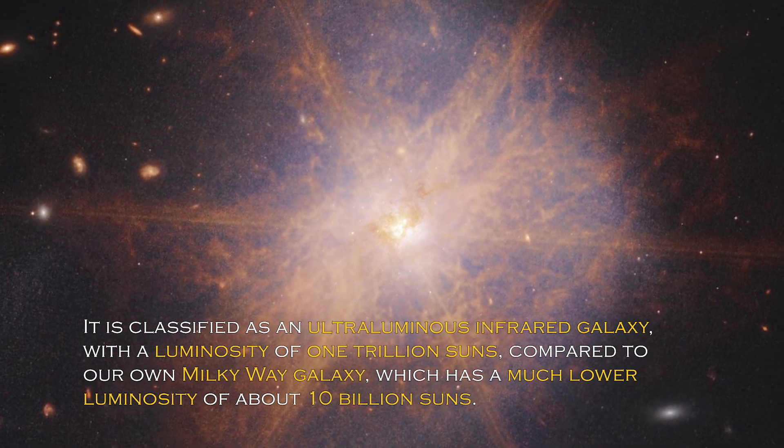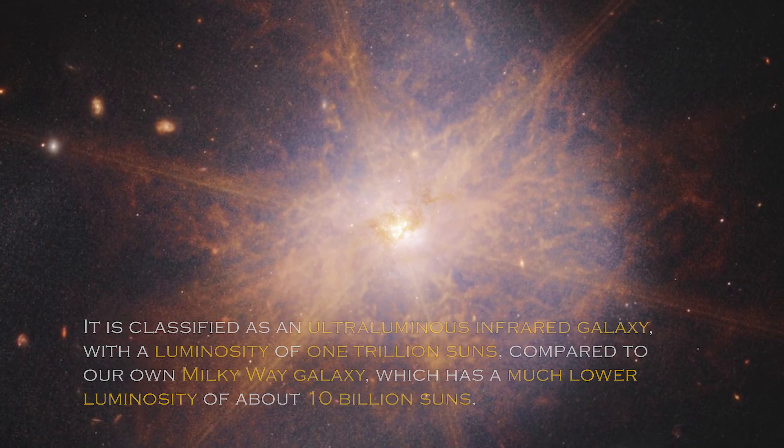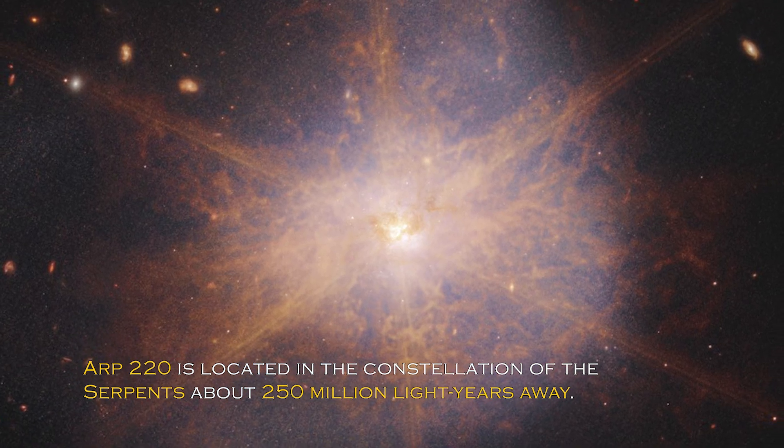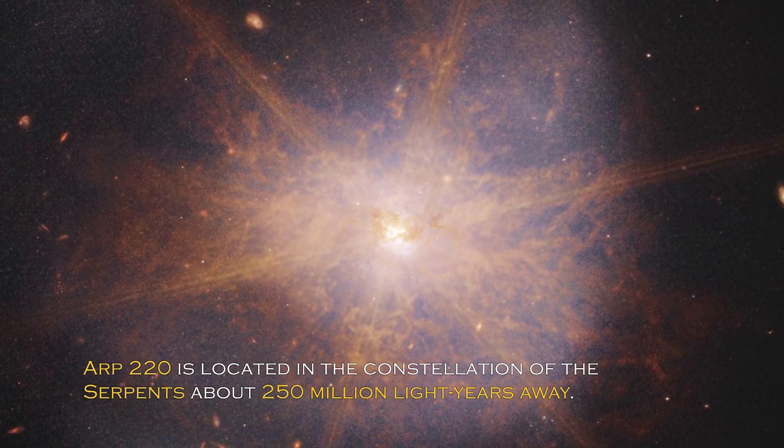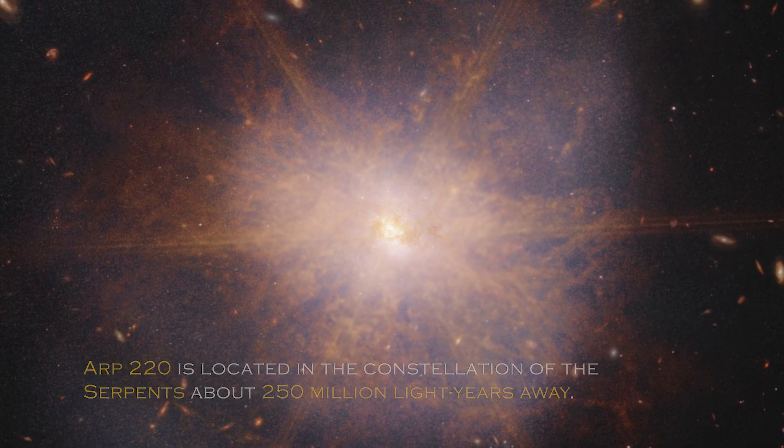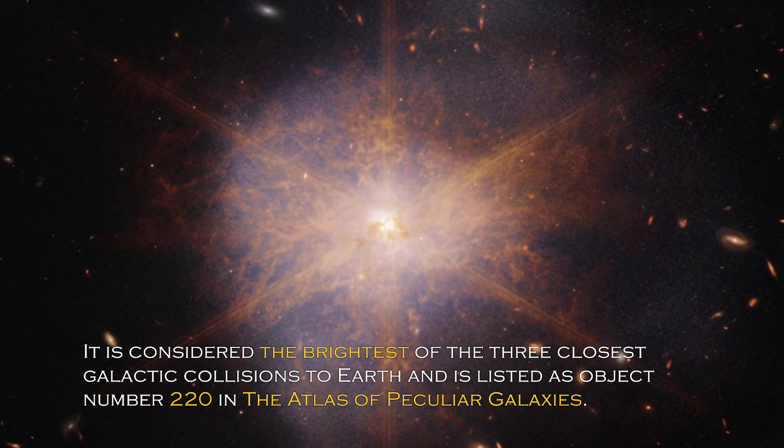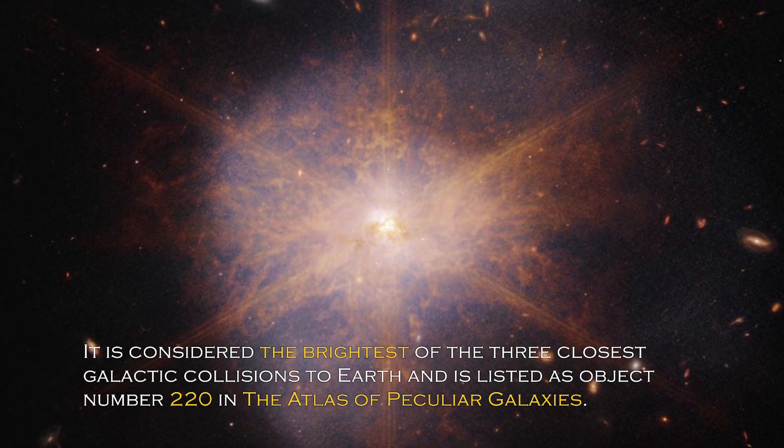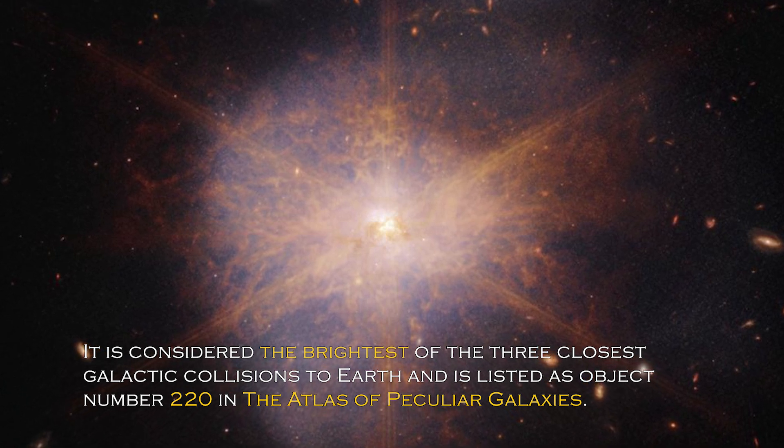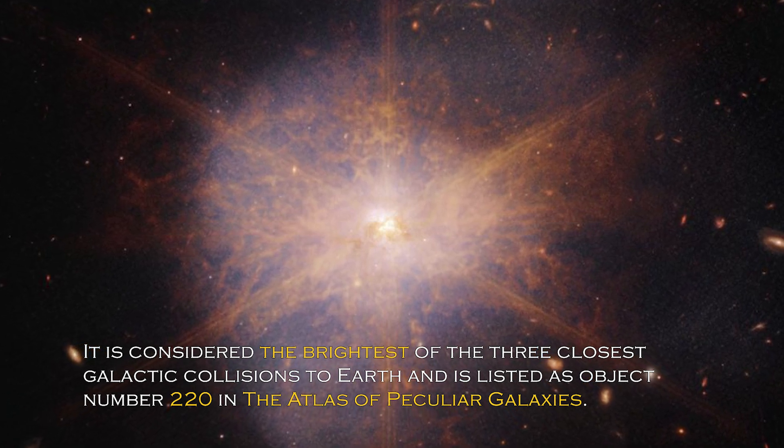ARP 220 is located in the constellation of the Serpent, about 250 million light-years away. It is considered the brightest of the three closest galactic collisions to Earth, and it is listed as object number 220 in the Atlas of Peculiar Galaxies.